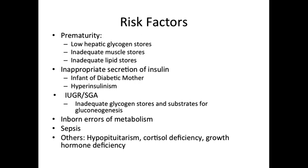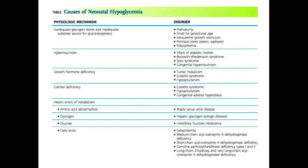Finally, inborn errors of metabolism, sepsis, pituitary disorders, cortisol, and growth hormone deficiency should be considered in cases of refractory hypoglycemia. The following table provides a comprehensive list of the various causes of neonatal hypoglycemia. By far the most common causes are prematurity, small for gestational age infants, and infants of diabetic mothers. However, it is important to keep in mind the following causes in your differential diagnosis.